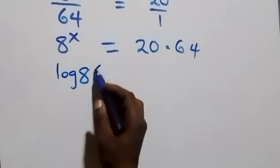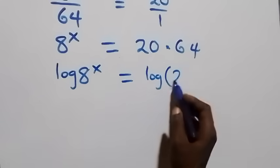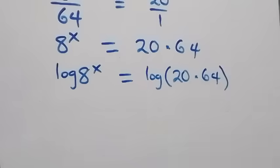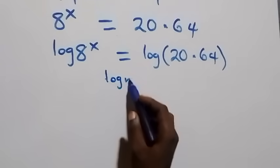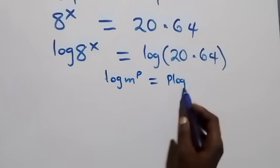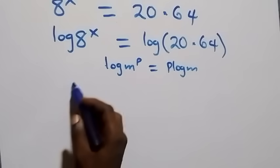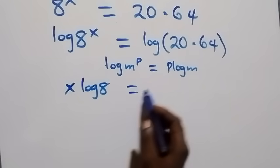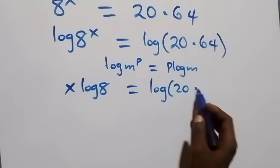We have log of 8 raised to power x equals log of 20 times 64. From the power law of logarithms, when we have log m raised to power p, this is the same thing as p log m. So here we have x log 8 equals log of 20 times 64.